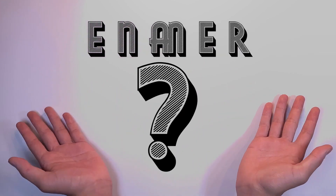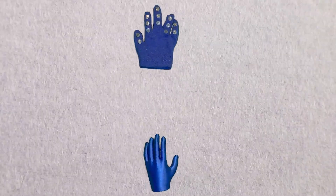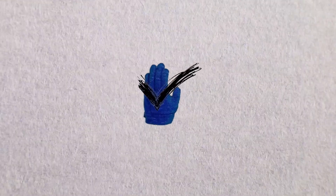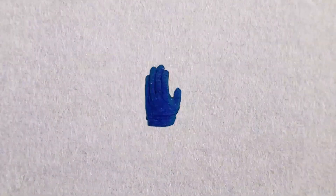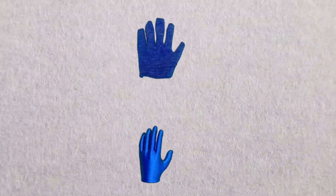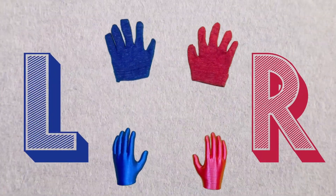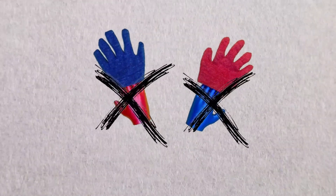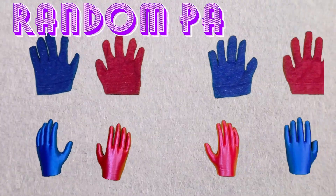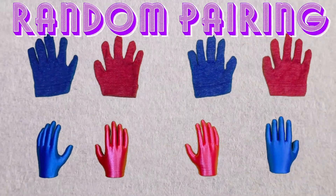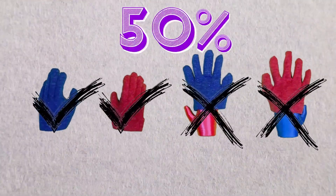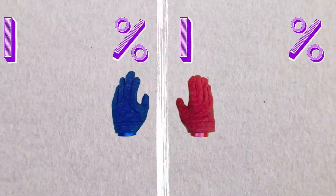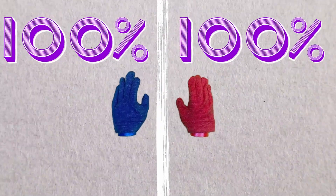But why does this matter? Many biological processes require a perfect fit between two complementary proteins, like a hand and a glove. But just as hands and gloves come in two forms of handedness, so do proteins. And when you mismatch handedness, the perfect fit fails. If you randomly pair gloves and hands, only half the pairs would work. Yet if we commit to all left or all right, there's a 100% success rate.